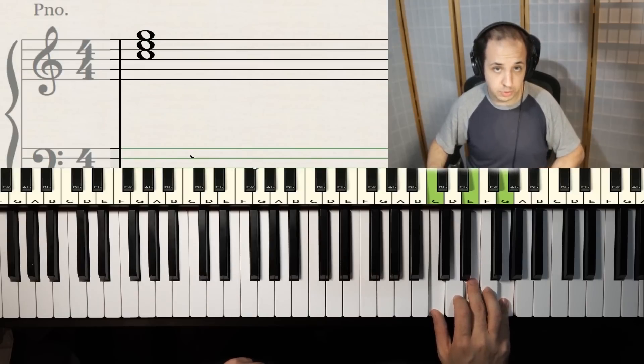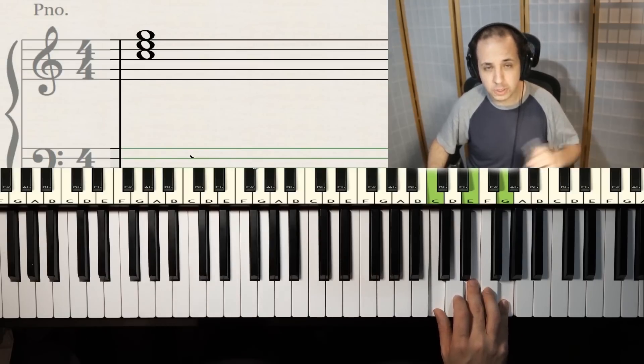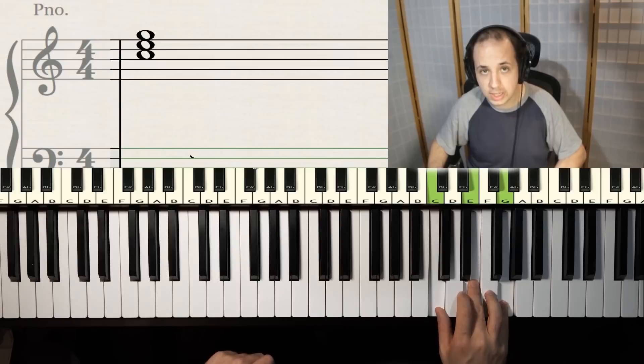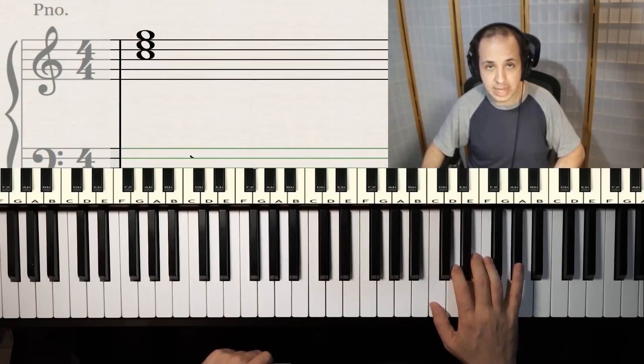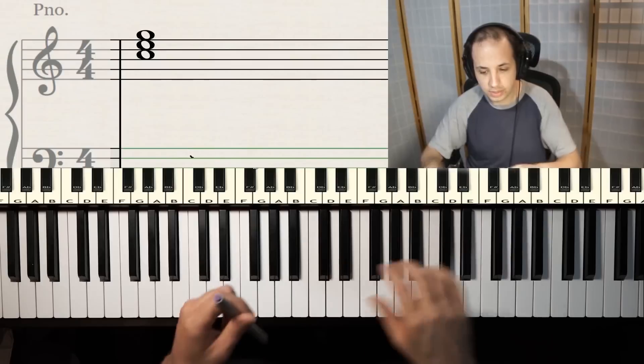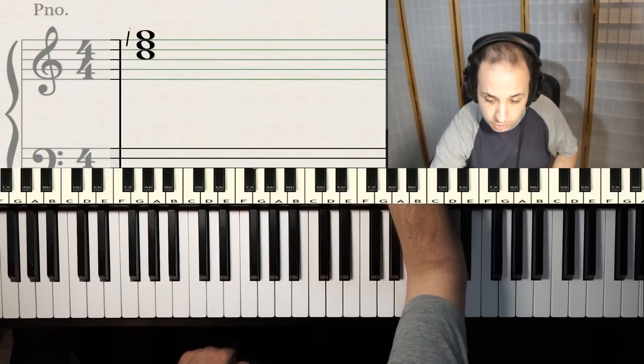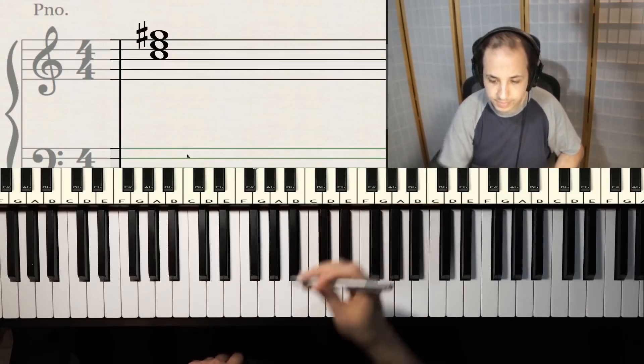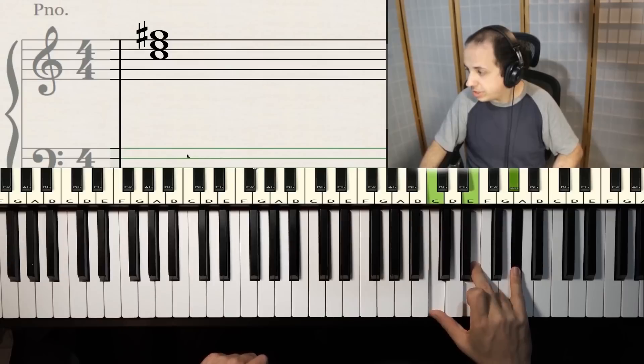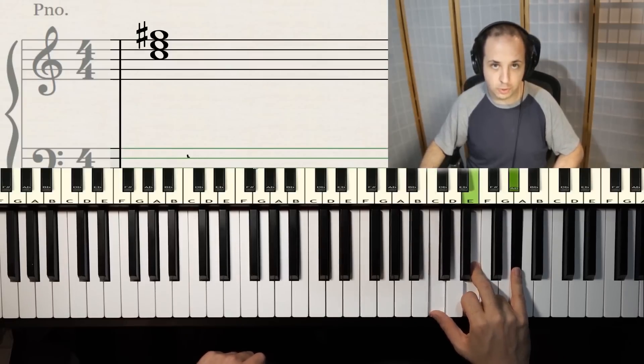What note do we have to move for this one? It's kind of like what we talked about before. You take the top one and you move it up a half step. So to do that, we use our sharp symbol. And there you go. This is what it looks like on the piano, the actual chord we're playing.